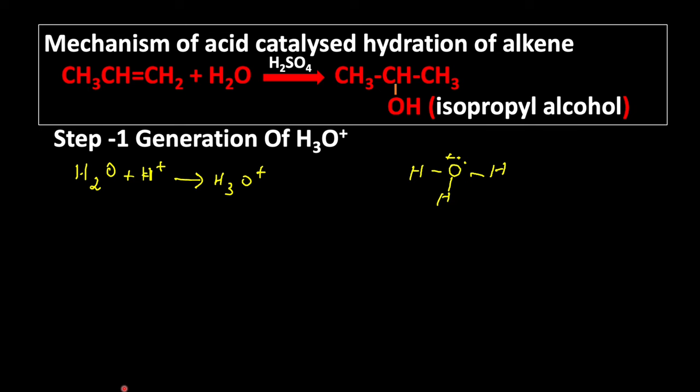Let us see the second step. Step 2: Formation of carbocation. Now, this hydronium ion attacks the electron-rich part of the double bond of alkene and produces carbocation.